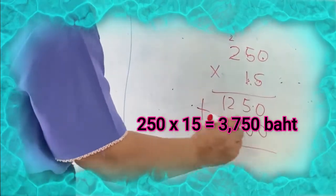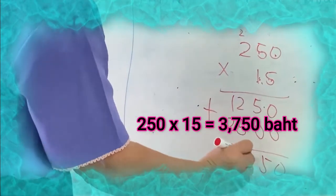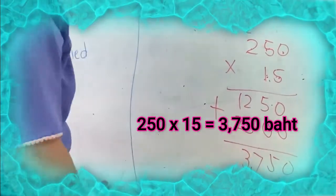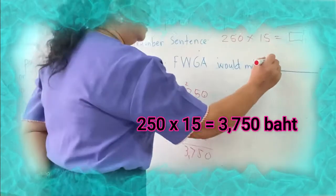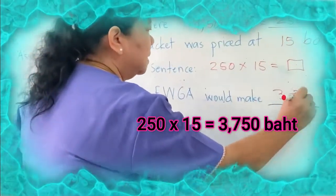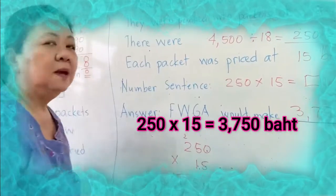And then add 0, 5, 7, 3. Therefore, this group earned 3,750 baht.